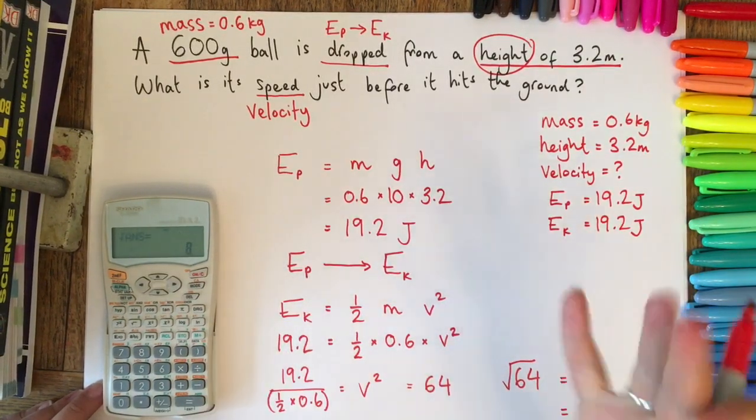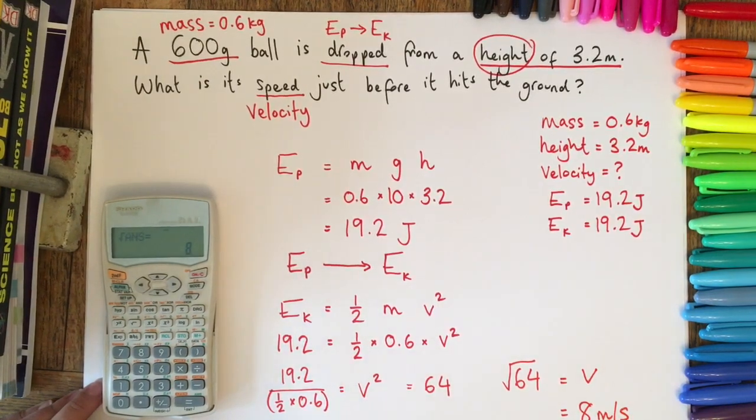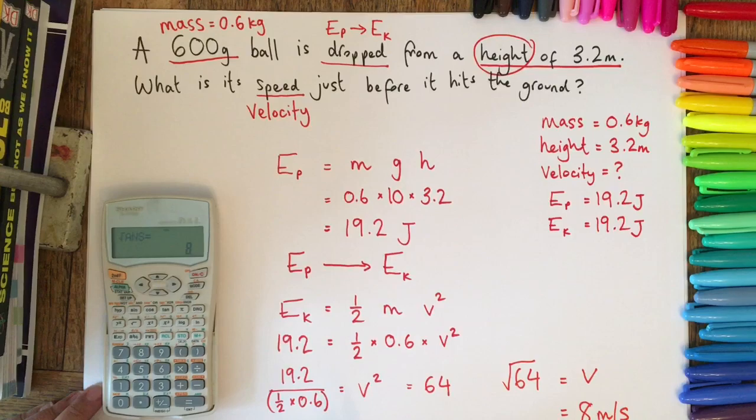I know that the square root of 64 is 8, so therefore that's 8 meters per second that this ball will be traveling at just before it hits the ground.